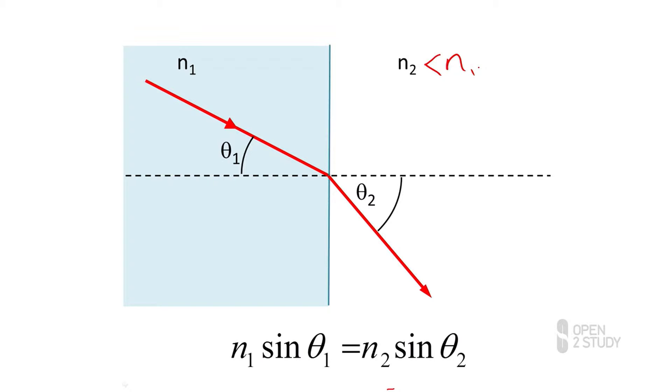Now theta2 will always be larger than theta1, so if we increase theta1, we'll be increasing theta2, and we'll get to a point where theta1 has become so large that theta2 will equal 90 degrees. That means the refracted ray is going to be running along the interface.